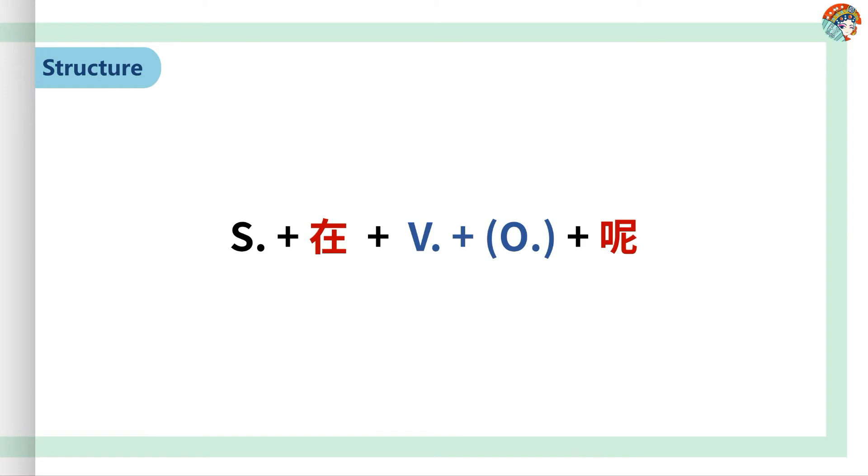Today we will learn the HSK Level 1 grammar point: how to express actions in progress with 在呢. An action in progress can be expressed by adding 在 before a verb or by adding 呢 at the end of a sentence. The whole pattern 在呢 is actually a full pattern. Only 在 or only 呢 is also frequently used in everyday speech.